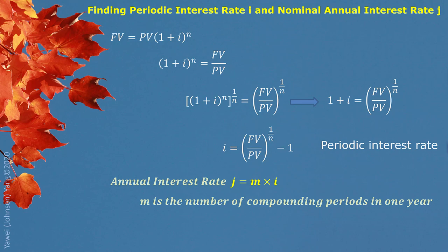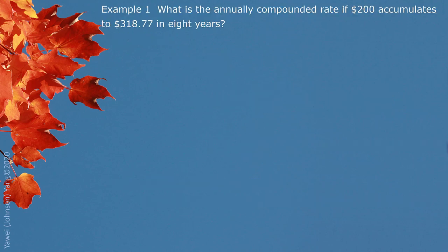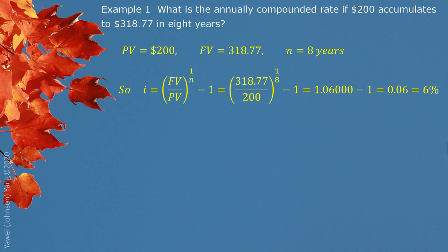We can get nominal annual interest rate. Example 1. What is the annually compounded rate if $200 accumulates to $318.77 in 8 years? We recognize present value $200, future value $318.77, and time period 8 years since interest is compounded annually. So 8 is the compounding period. From the formula earlier we got, we put all the information in, we can get 6%.